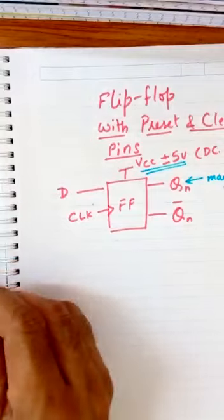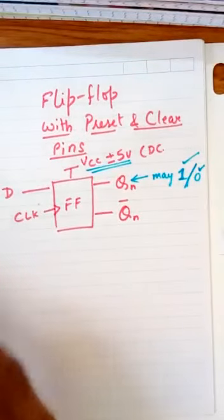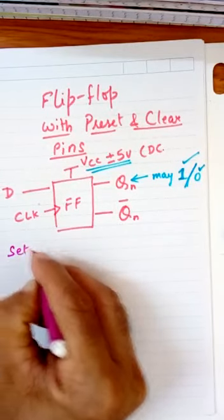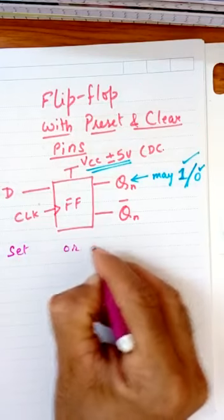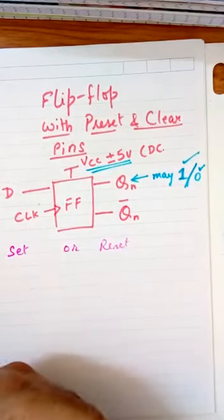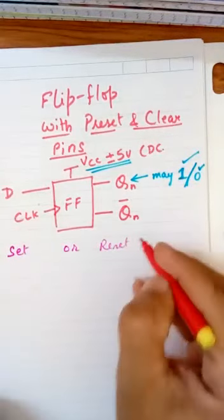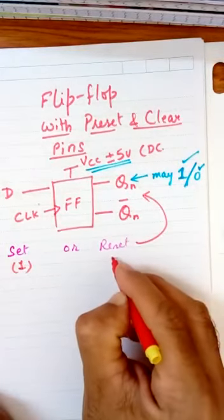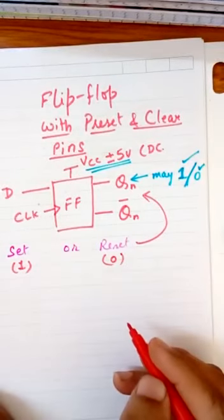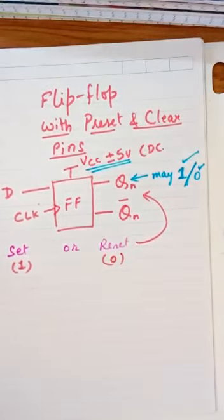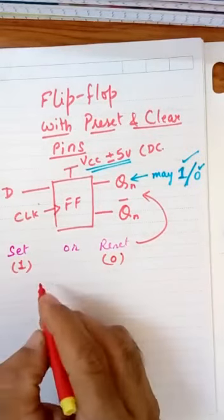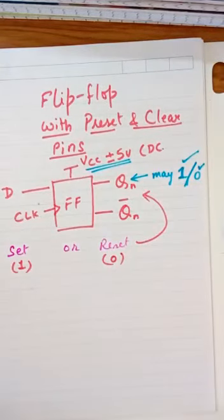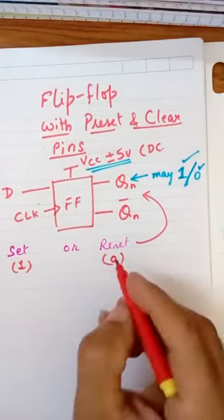So to set or reset the output at 1 or reset to 0, we need an initial condition of 1 or 0 at the output after powering on. It is our requirement to either set or reset it.